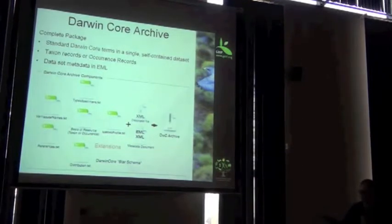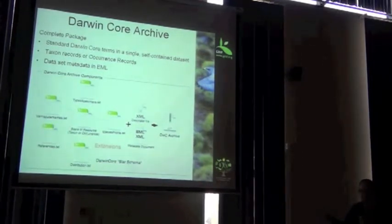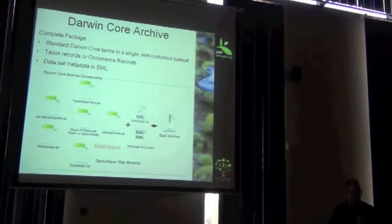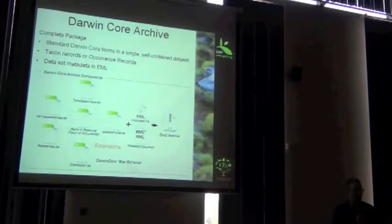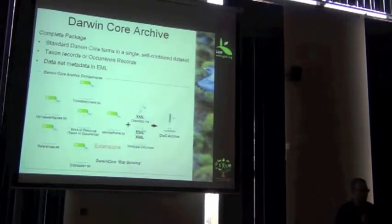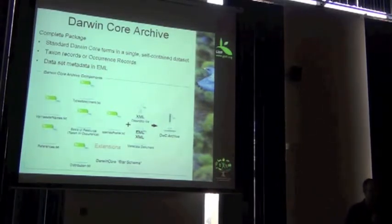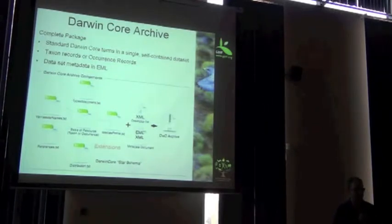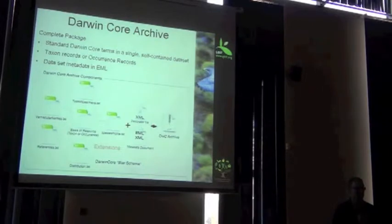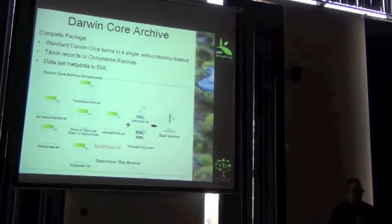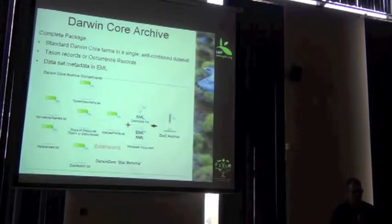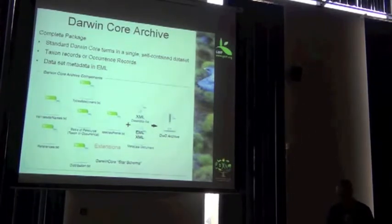Imagine you've got all these text files, XML files, in one folder, zipped together. It's a Darwin Core Archive. It's not very complicated. And relative to other protocols for exchanging biodiversity information, it's extremely simple. There's no web services involved, there's not more than a thousand terms to choose from. It's simple. That's the key that I'm trying to drive home here now.